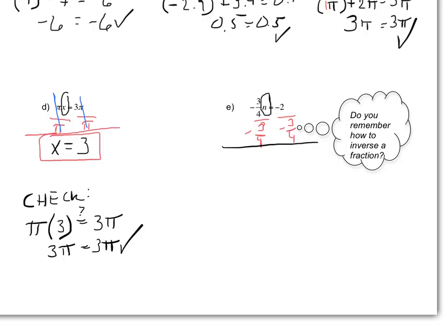On the left-hand side, negative 3/4 divided by negative 3/4 becomes 1 — anything divided by itself is 1. That allows me to bring n down. Over on the right-hand side, let me remind us how to multiply and divide with a fraction. I bring the negative 2 down from the original equation and write it divided by negative 3/4.